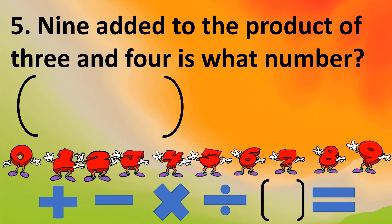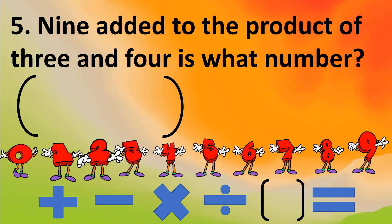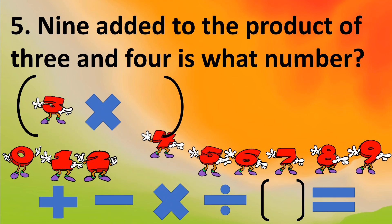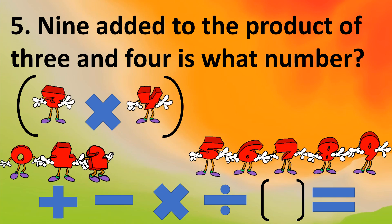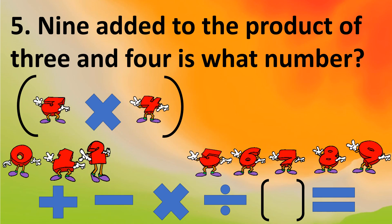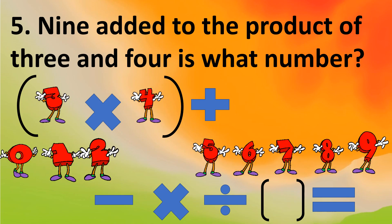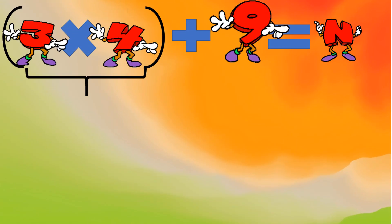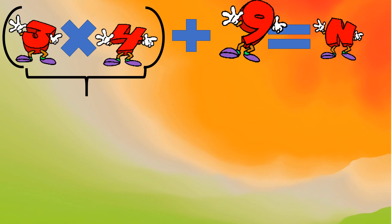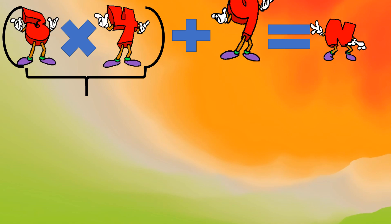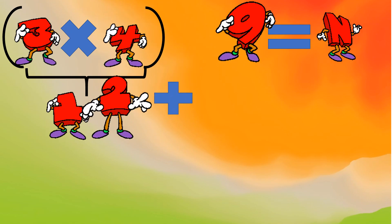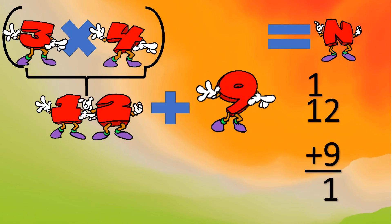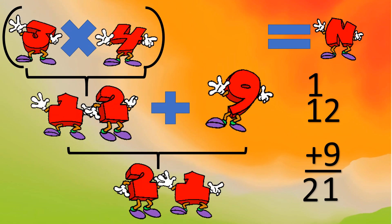Number 5: We have a combination of two numbers — the product of 3 and 4 — so write parentheses: (3 × 4). The next operation is '9 added,' and added means addition, so plus 9 equals N. The equation is (3 × 4) + 9 = N. First find the product: 3 times 4 is 12. Then 12 plus 9 equals 21. The final answer is 21.